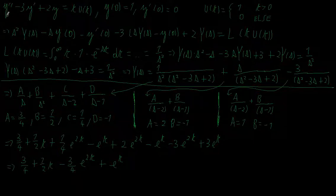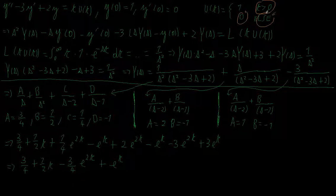I have the differential equation y'' minus 3y' plus 2y equals t times u(t), where u(t) is defined as 1 if t is greater than 0 and 0 elsewhere. I have the initial conditions y(0) equals 1 and y'(0) equals 0. I want to solve this differential equation using the Laplace transform.